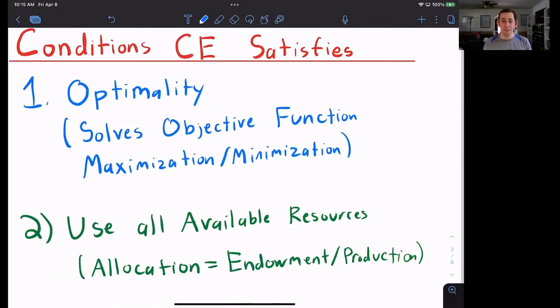Let's talk about the conditions that competitive equilibrium needs to satisfy. We've hinted at one already: optimality, which means that the allocation in a competitive equilibrium needs to solve the objective functions of the people who live in that economy. Maybe it's firms, maybe consumers, maybe both. Whatever type of agents you have, the competitive equilibrium needs to solve their objective functions.